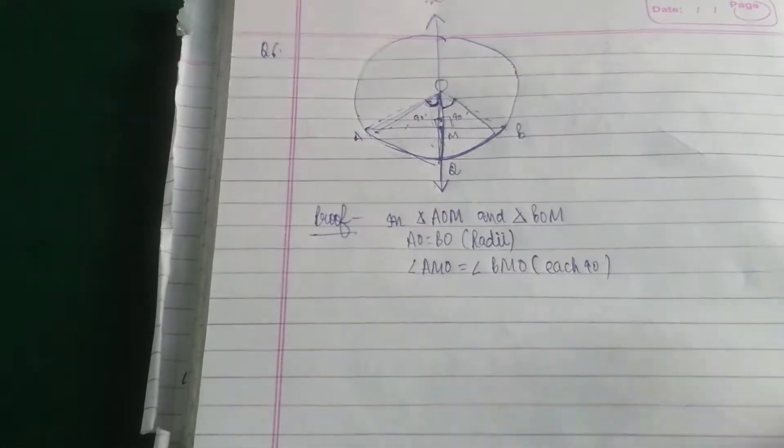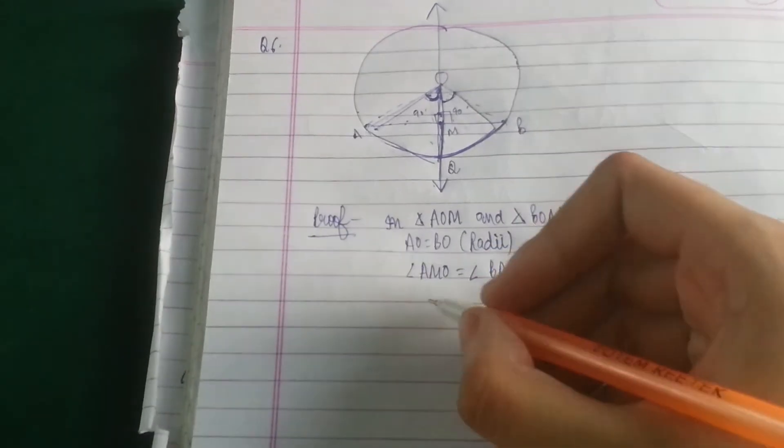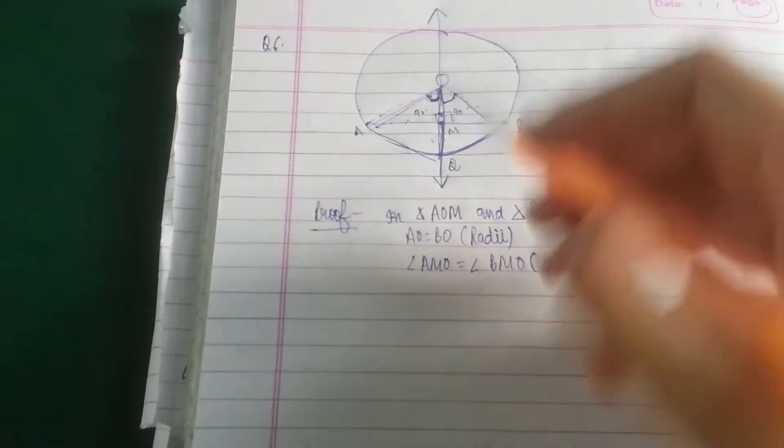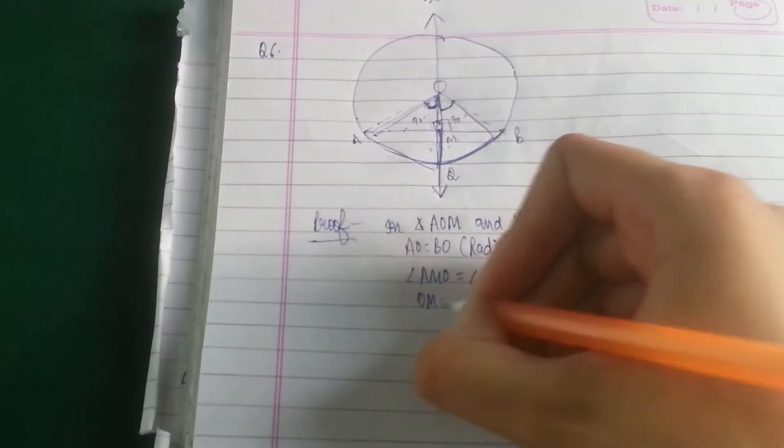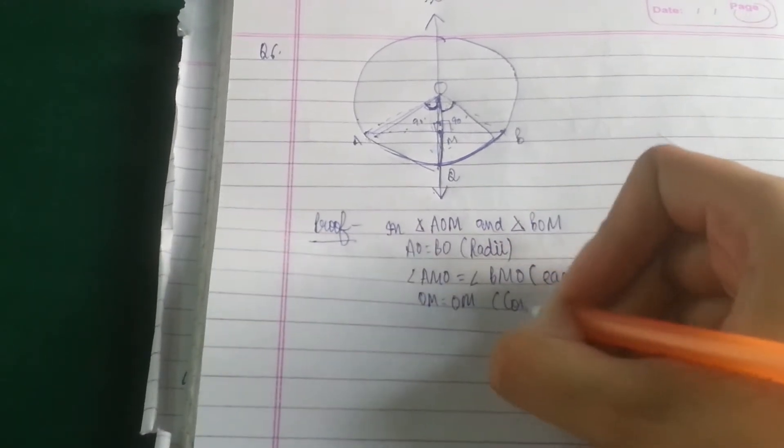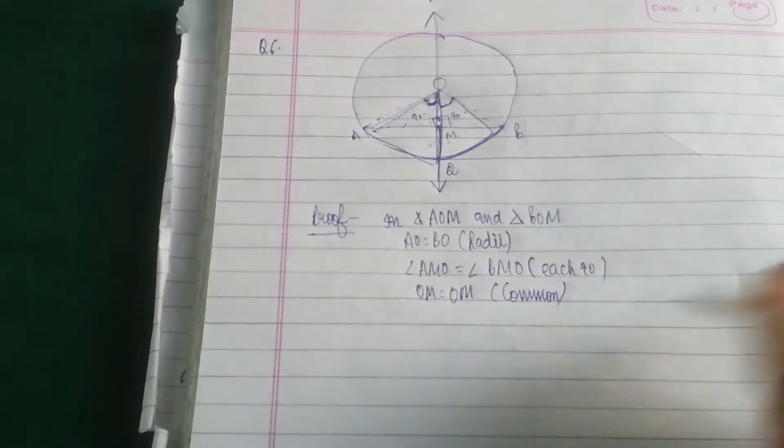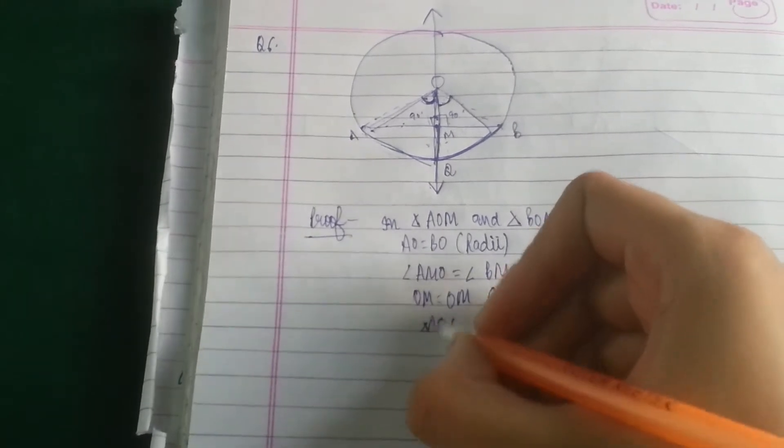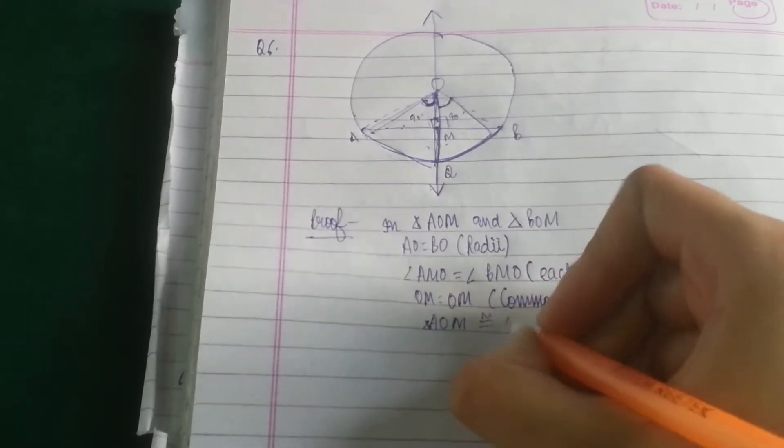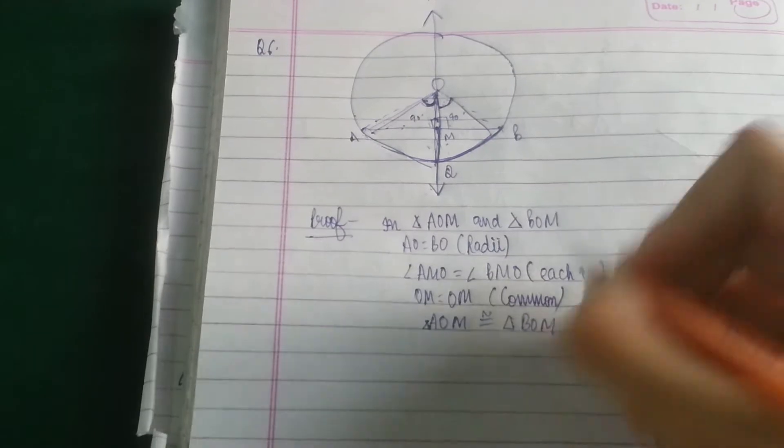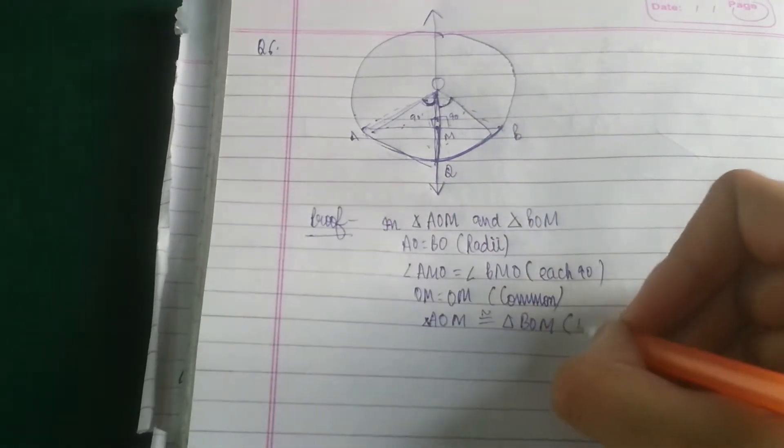Now these two conditions and after that OM is equal to OM because this is common. Now we have proved that triangle AOM is congruent to triangle BOM, by which rule? It is by RHS.